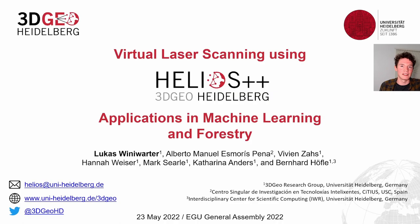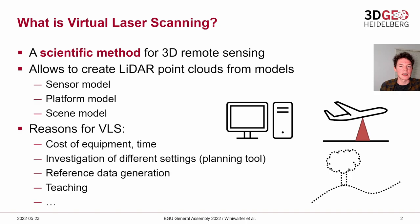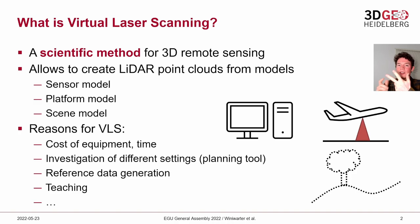Virtual laser scanning is a scientific method for 3D remote sensing that allows you to create LIDAR point clouds from models. By models we mean a sensor model, which is a model of the laser scanner itself; a platform model, which models the behavior of the platform the scanner is mounted on — this can be an airplane for airborne laser scanning, a static tripod for terrestrial laser scanning, or a car for mobile laser scanning; and a scene model, which is a model of the three-dimensional scene that surrounds the laser scanner and also acts as a canvas for the recorded point clouds.